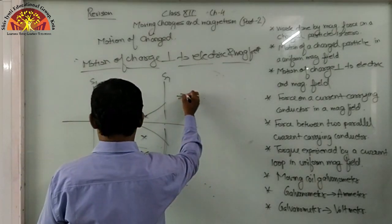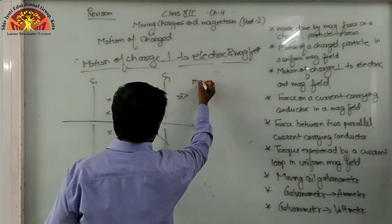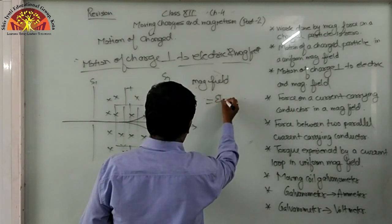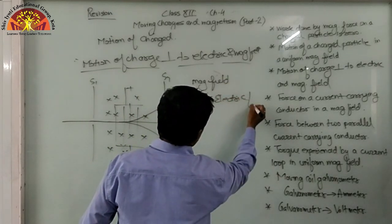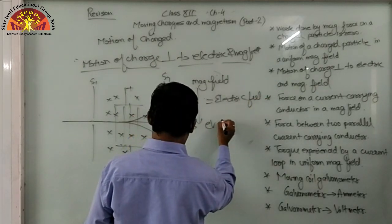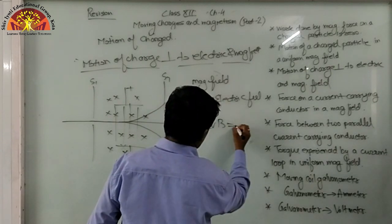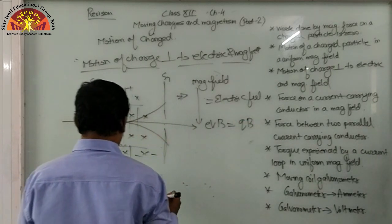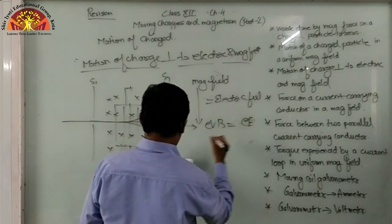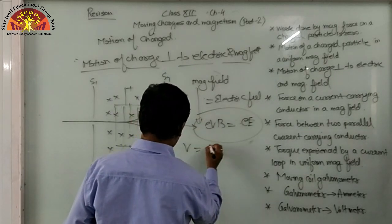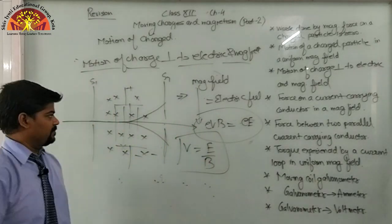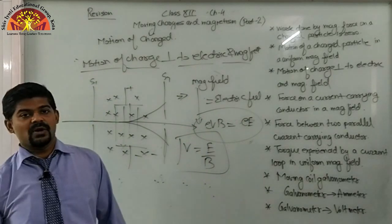This means the electron will come out straight only when the magnetic force evB and the electric force qE are equal. Solving: evB = eE, so v = E/B. This setup is called a velocity filter — only particles with velocity v = E/B pass straight through.